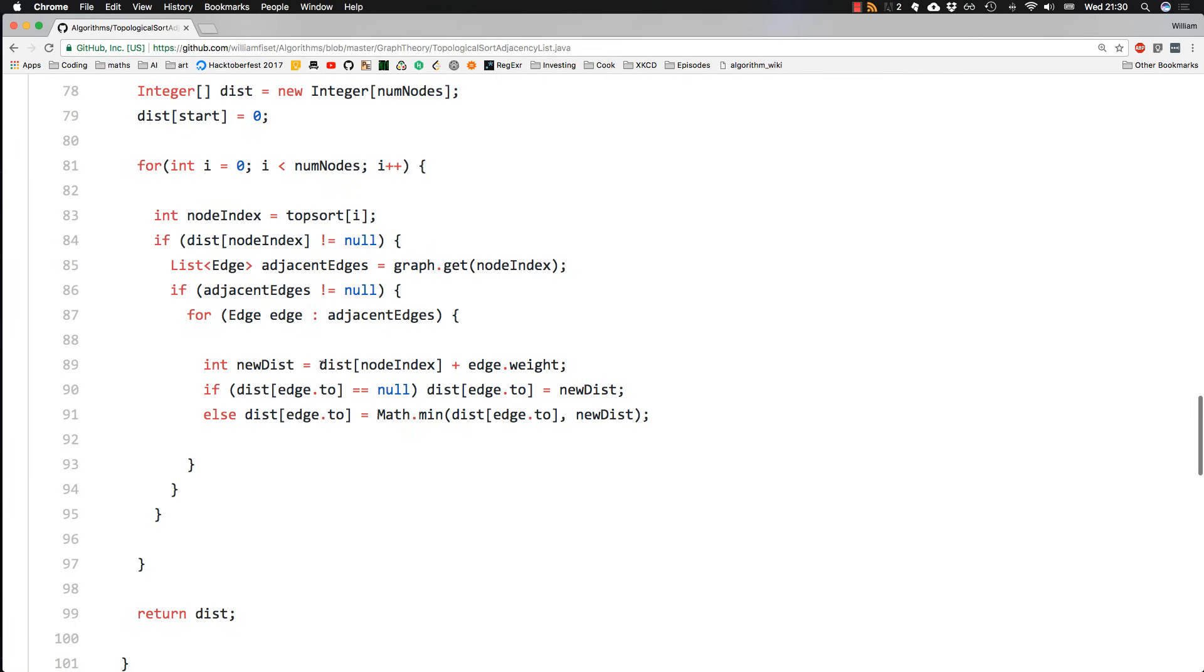So we compute the new distance. So this is the distance to the node we're currently at plus the edge weight. So this is like the competing distance, the distance we were trying to improve upon.